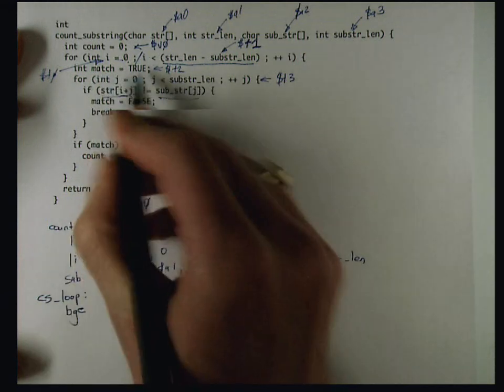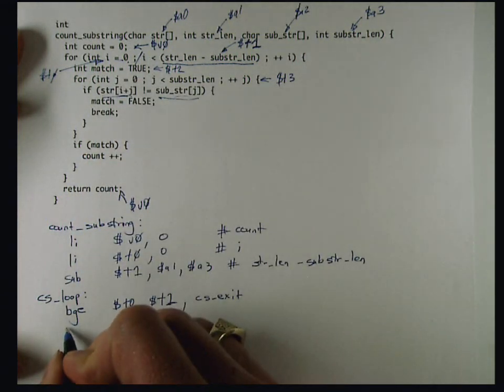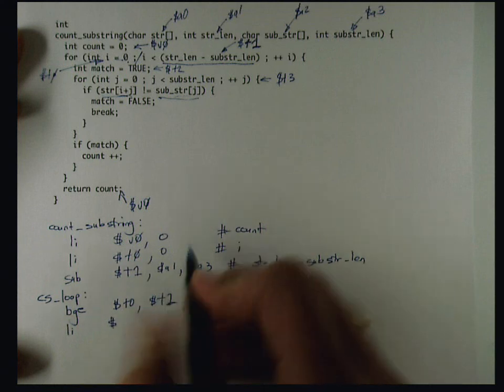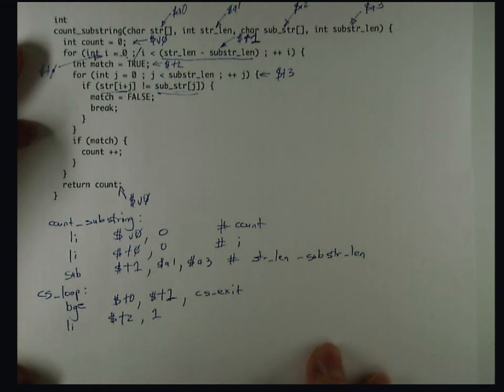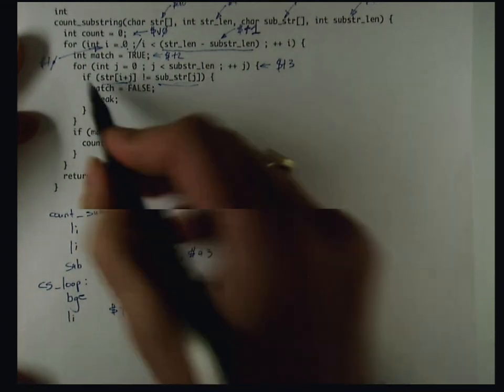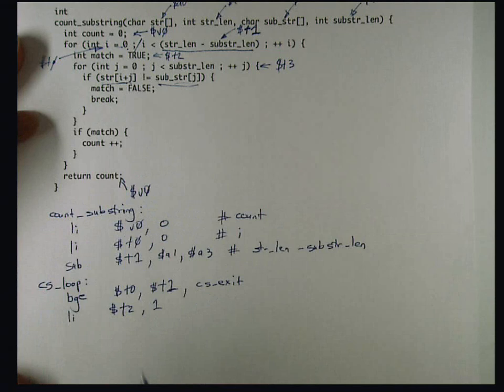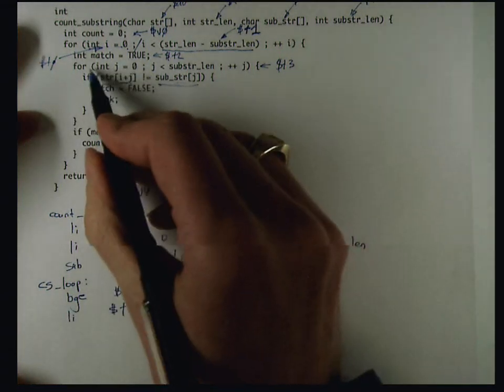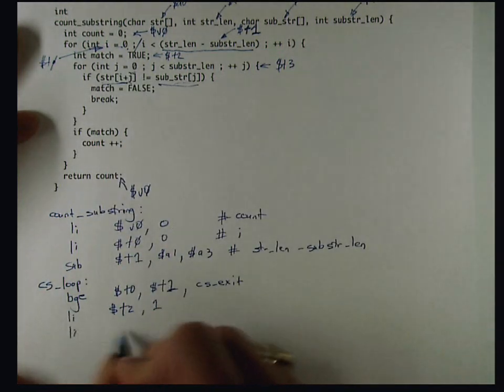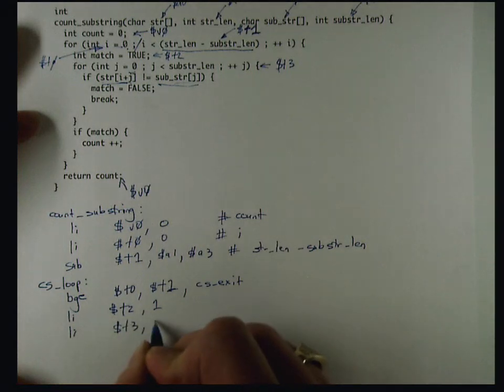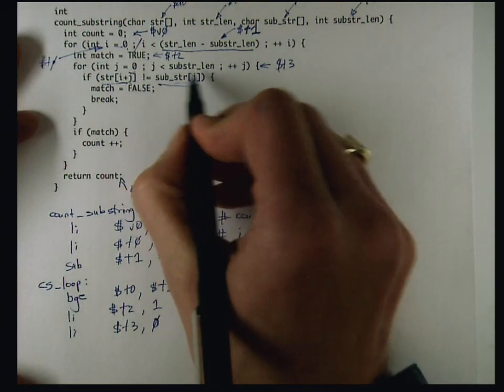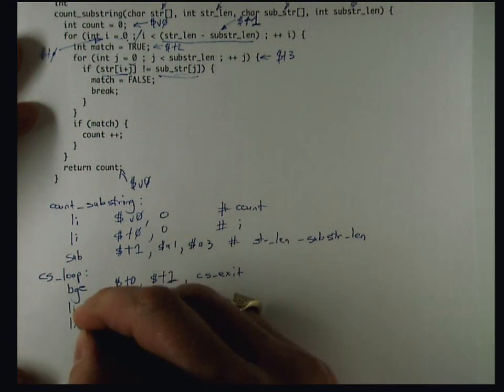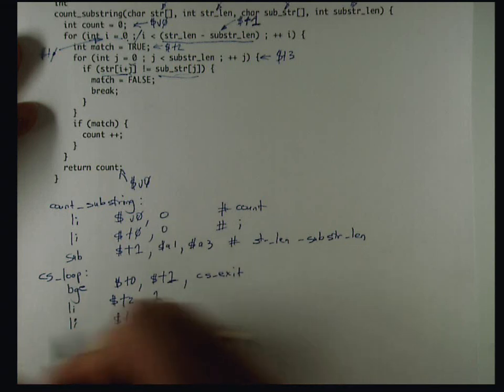I'm ready to get into the body of the loop. The first thing I have to do is initialize match to true, and true is 1, so I'm going to load immediate T2 with 1. Now I have the inner loop to do. The first step of that is initializing J. I'm going to load immediate T3 with 0, and then I'm going to test the inner loop condition.